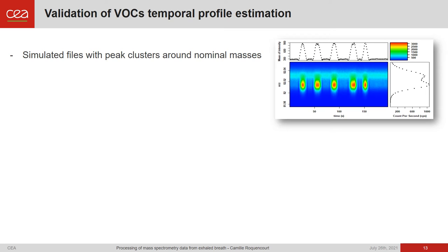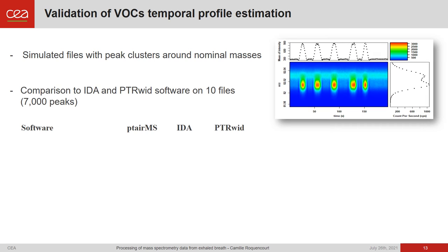We are validating the VOC temporal profile estimation of our package on simulated data. We create files by simulating peaks around nominal masses; the most important input parameters are the distance between peaks and the temporal evolution — for instance, this peak is constant and this one is expiration. We then compare ptrMS performance to other software, IGA and PTR-Wind, on 10 simulated files representing 7,000 peaks.